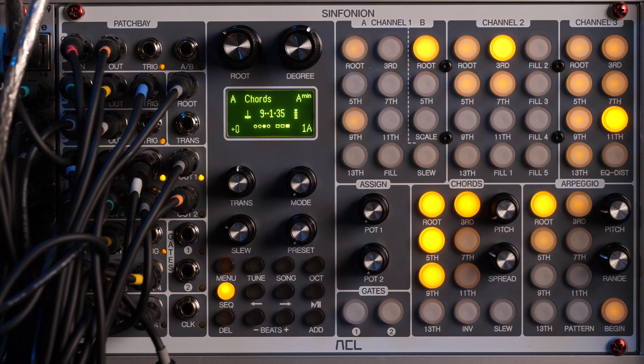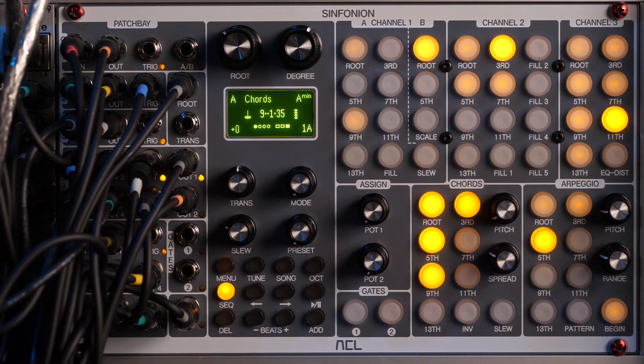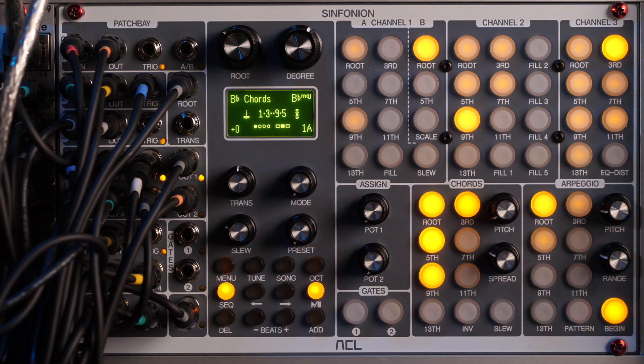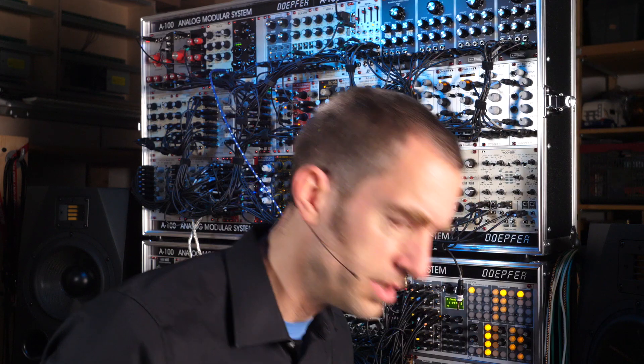But now we want to clock this automatically. First, we need an external clock signal patched into CLK. If you now start the sequencer by pressing the play/pause button, the music will move forward automatically. Sounds funny — chords change way too fast, don't they?